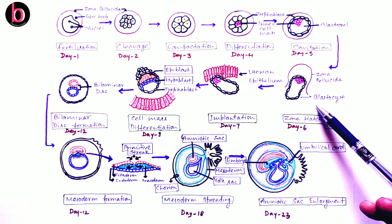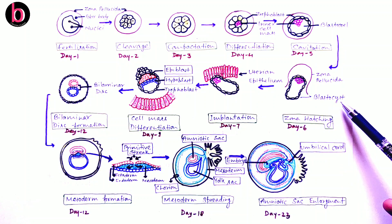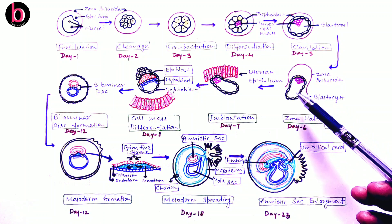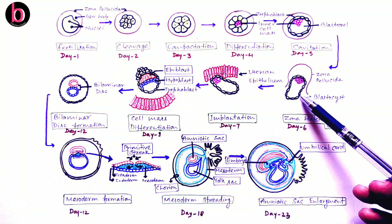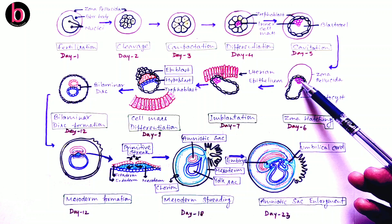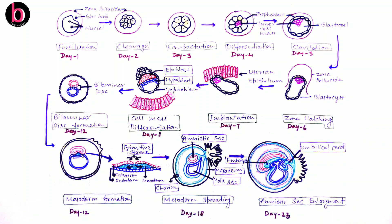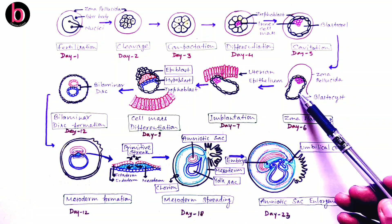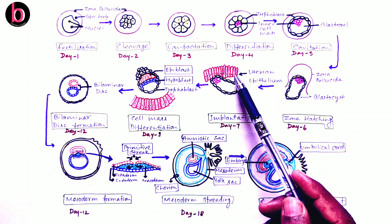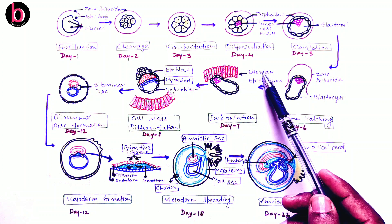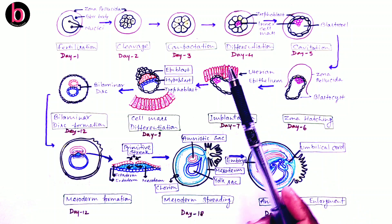The structure that is released after breaking of the zona pellucida is given in NCERT as a blastocyst. The blastocyst is a structure carrying the blastocoel, trophoblast, and inner cell mass — this whole structure is the blastocyst, and the stage is blastula. After this, the blastocyst comes very close to the innermost layer of the uterus, known as the endometrium.